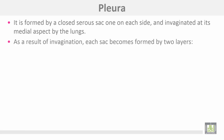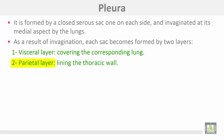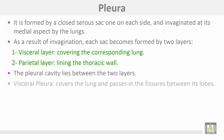As a result of invagination, each sac becomes formed by two layers. Number one: visceral layer, covering the corresponding lung. Number two: parietal layer, lining the thoracic wall. The pleural cavity lies between the two layers.